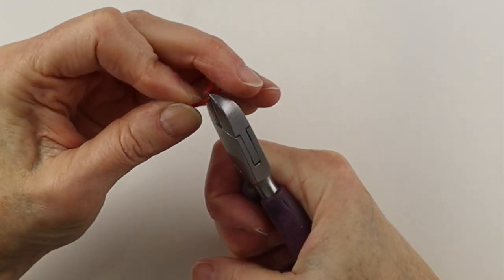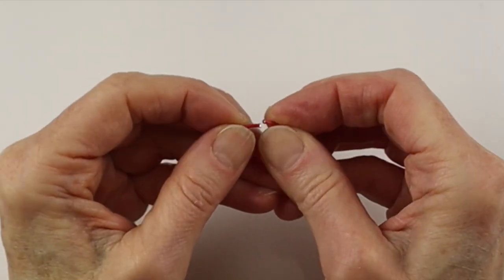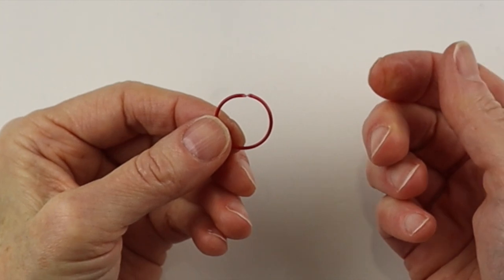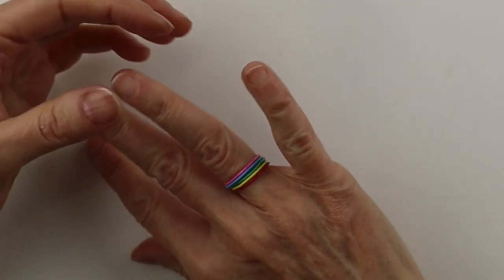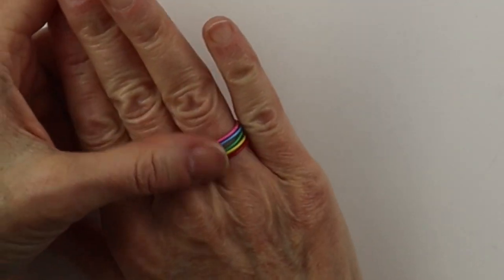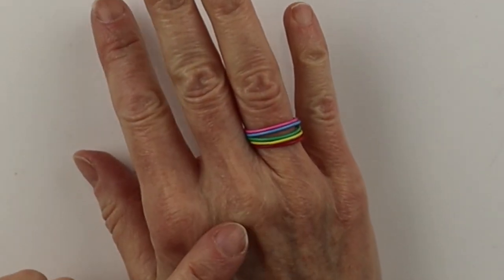And then we're going to clip this one. And then you want to match those up and do the rest. Then you can stack them up, just put all the ends to the back, and there you have your super fun rainbow paperclip rings.